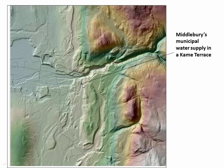We'll learn in the groundwater section of this class that this is actually where Middlebury's municipal water supply comes from — these sediment deposits. That's a good example of why the legacy of these glaciers is so important to us: all the water we're drinking is filtered through these glacial deposits.